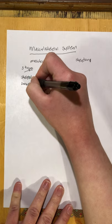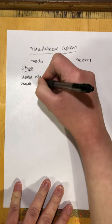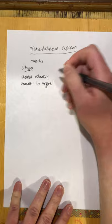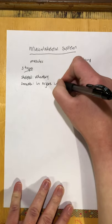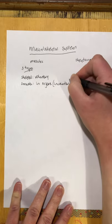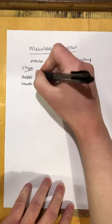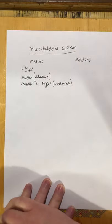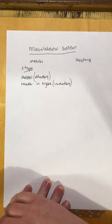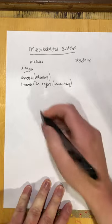There's also smooth muscle. Smooth muscle is in organs, so it's involuntary — we don't have control over these ones. For example, smooth muscle is in the intestines, so we don't have to think about or tell our intestines to move food through them. They just do it on their own — that's an involuntary muscle.